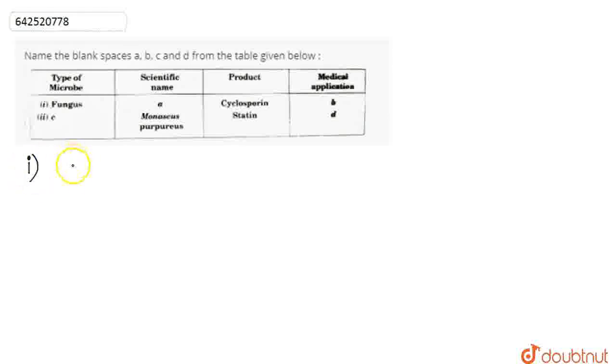So we talk about the first part. The type of microbe is fungus, and we have to give its scientific name that produces cyclosporin, and also give its medical application. Cyclosporin is produced by Trichoderma.